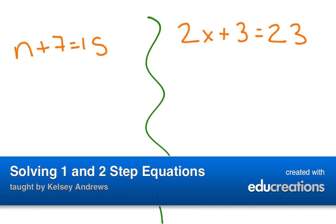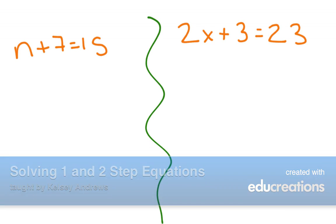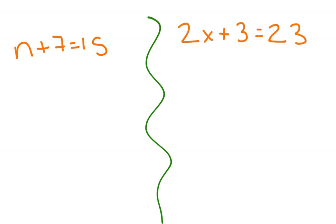When we're trying to solve equations, our goal is to isolate the variable. We want to get the variable by itself on one side of the equal sign and our numbers on the other side of the equal sign. That way we know exactly what it's worth.